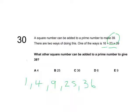So 36, what do you add to it to make 39? It's 36 plus 3, and that is the answer because 36 is a square number and 3 is a prime number.